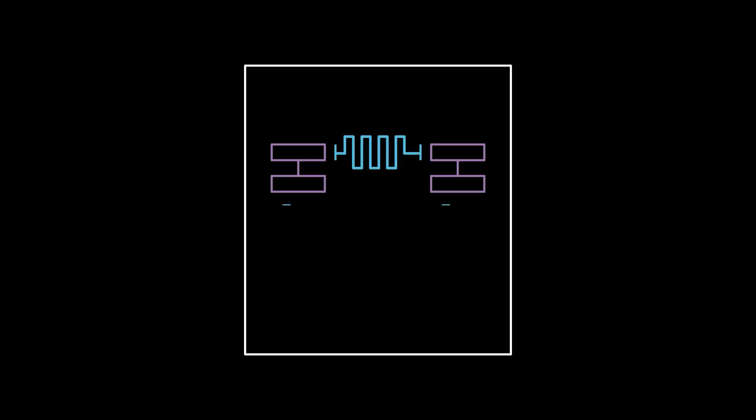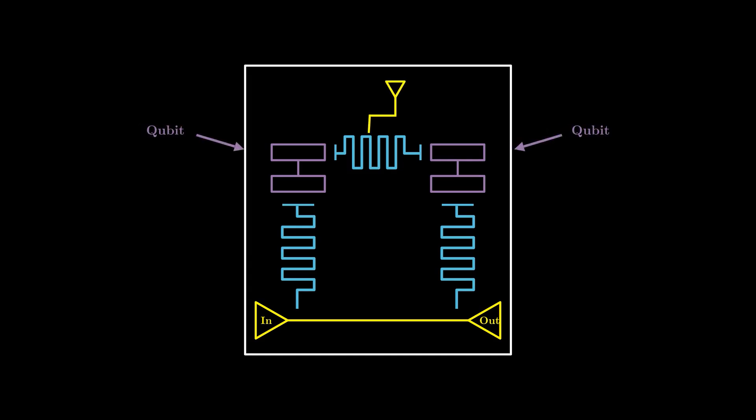Resonators are another very common circuit element, and function both like wires to couple qubits together, as well as for reading out the state of our qubits. Transmission lines are also used to communicate with these readout resonators, and allow us to send signals to our resonators and qubits.